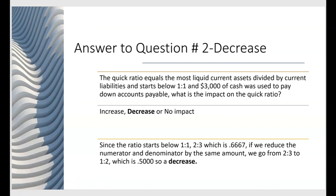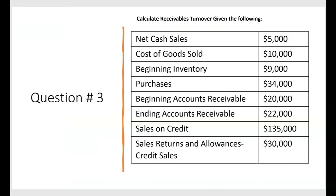So when they give you a transaction and ask for the impact on a ratio, watch out for when the numerator and denominator go up or down by the same amount — because the ratio will be impacted. Now let's look at a different type of ratio question where they give you financial statement figures and ask you to calculate — in this case — the receivables turnover ratio. Usually they give you way more information than you need, and you just have to take what you need and leave the rest.